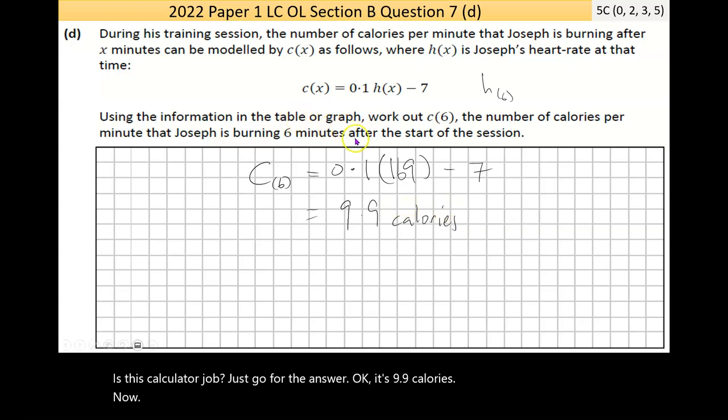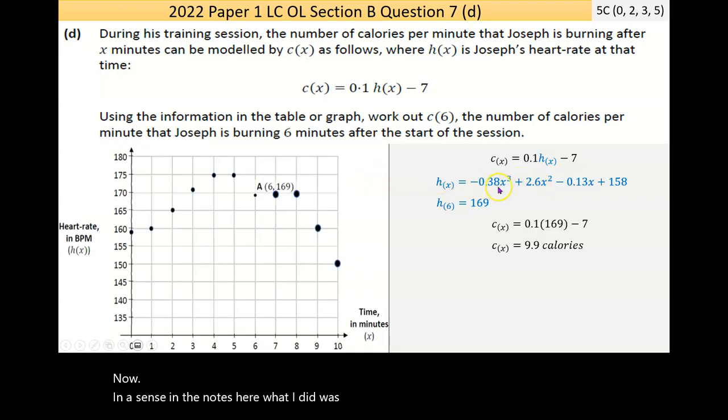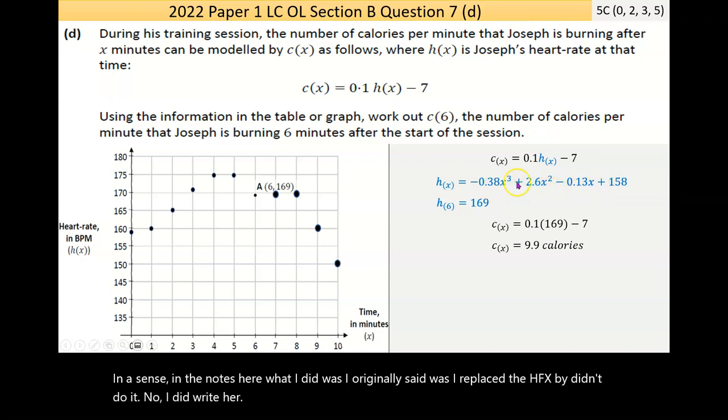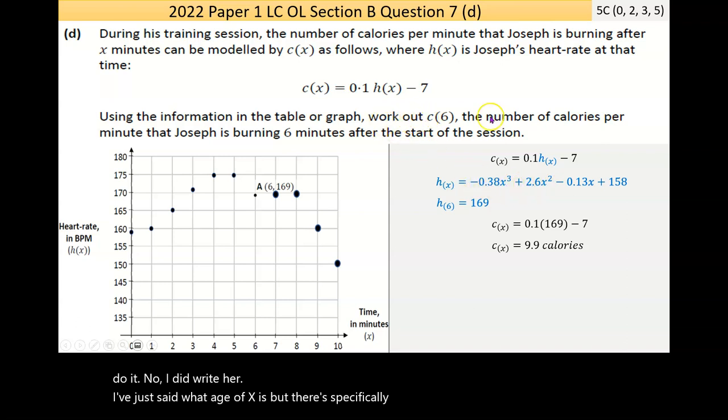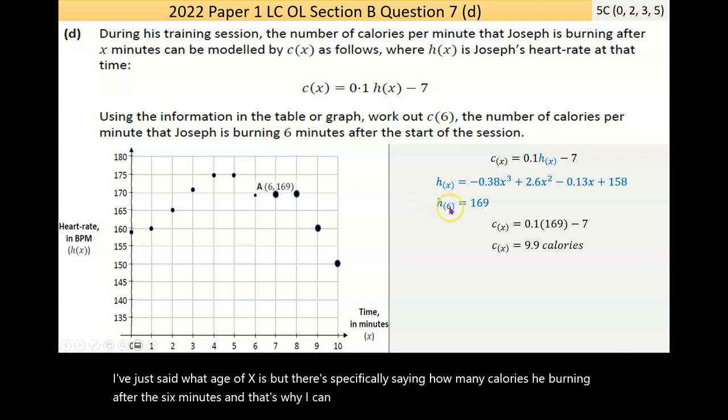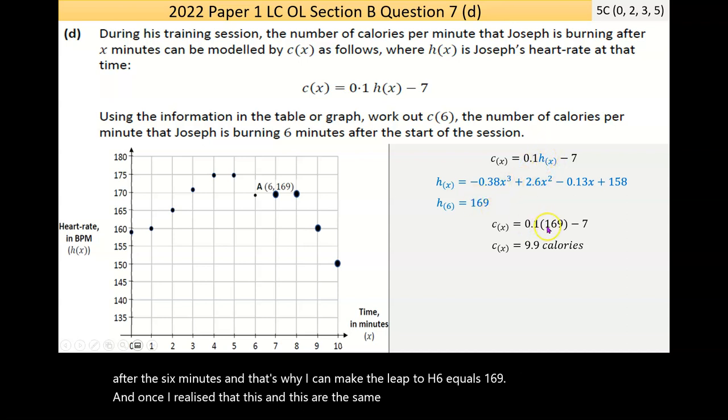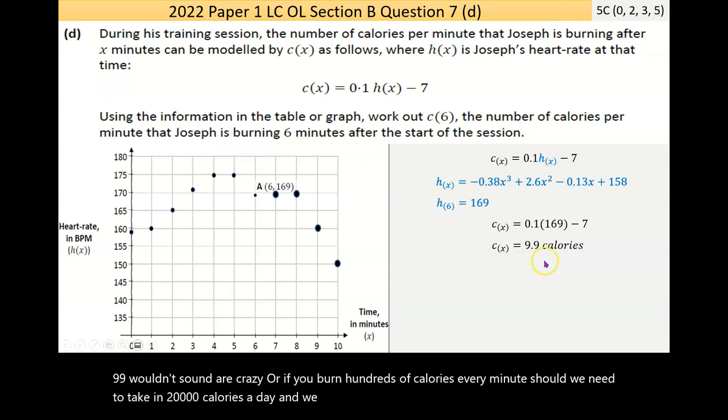h of 6, if I go back, was 169. So that h of 6 is the same thing as 169. That would be 0.1 times that. It's 9.9 calories. How many calories would you burn in a minute of exercise? 9.9 wouldn't sound crazy. If you're burning hundreds of calories every minute, we'd need to take in 20,000 calories a day, and we don't. So it doesn't ring any bells, so I'm fairly happy that we're correct.